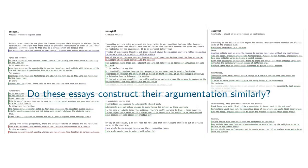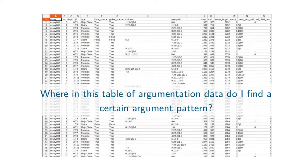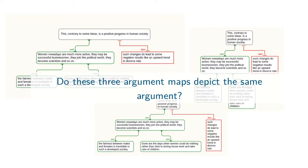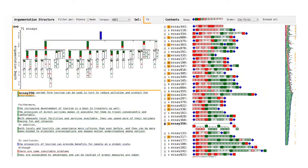Do these three essays construct their argumentation similarly? Where in this table of argumentation data from the previously seen texts can I find certain argumentation patterns? Do these three argument maps depict the same argument? We have developed a visual analysis system for argumentation and essays that can answer these questions at a glance. Come to our talk to find out how it works.